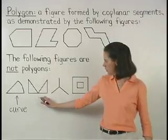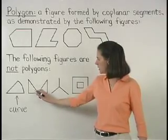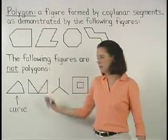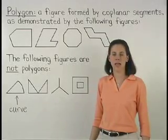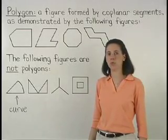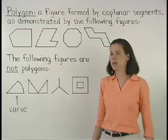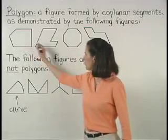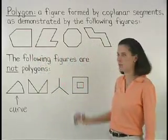The second figure shown is not a polygon because it has two separate interior regions, and polygons can have only one interior region, as demonstrated by the first group of polygons on the board.